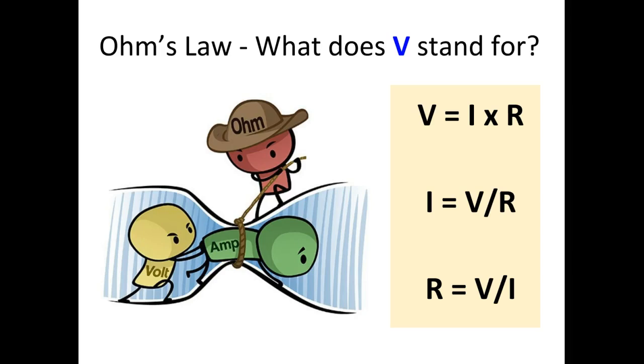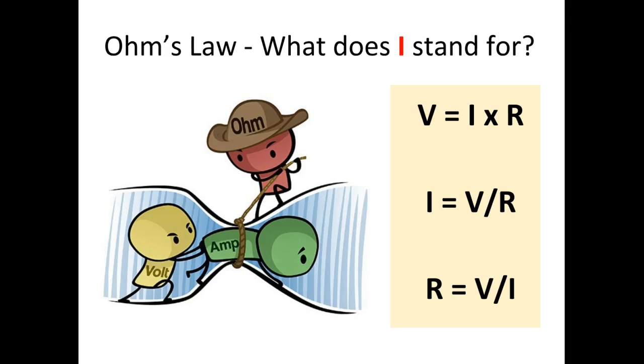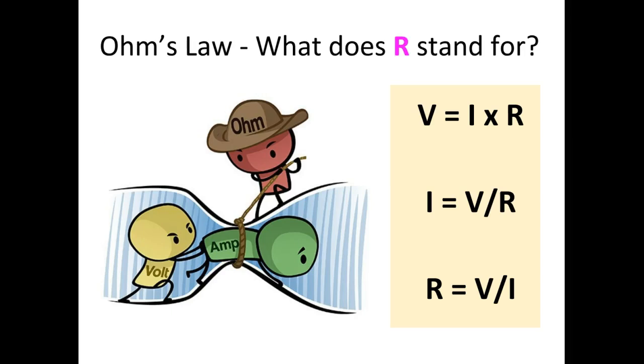What does V stand for? V stands for voltage. In this equation, what does I stand for? I stands for current. What does R stand for? R stands for resistance.